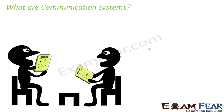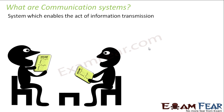So whenever I say communication system, it is nothing but a system which enables the transfer of information. It is a system that enables the act of information transmission. Information is the key point in a communication system — communication systems exist because information exists. So what exactly is information?